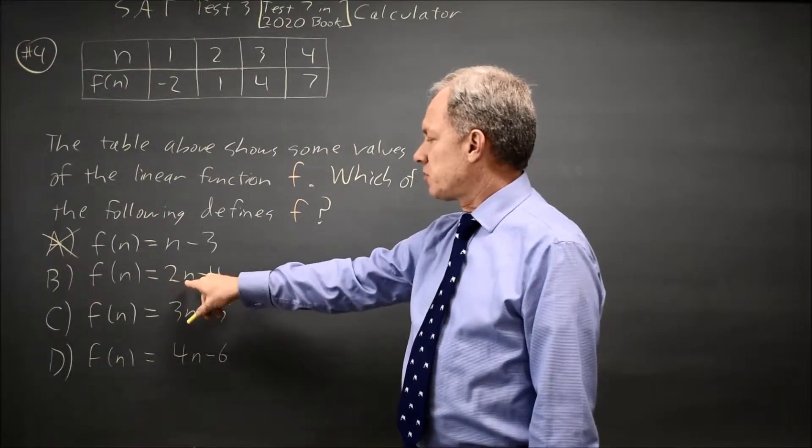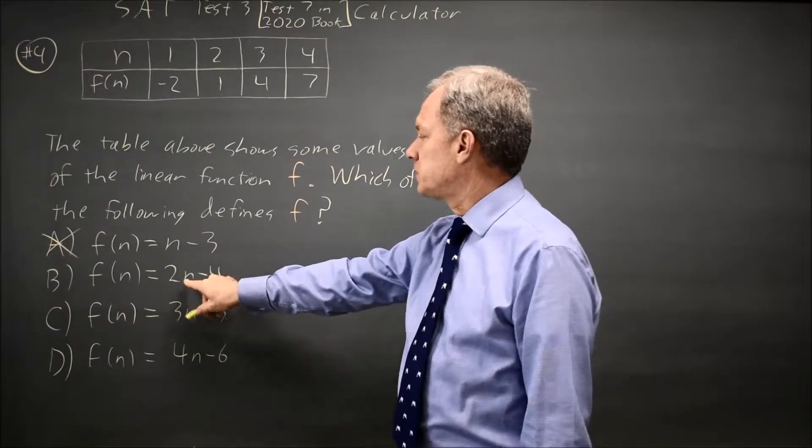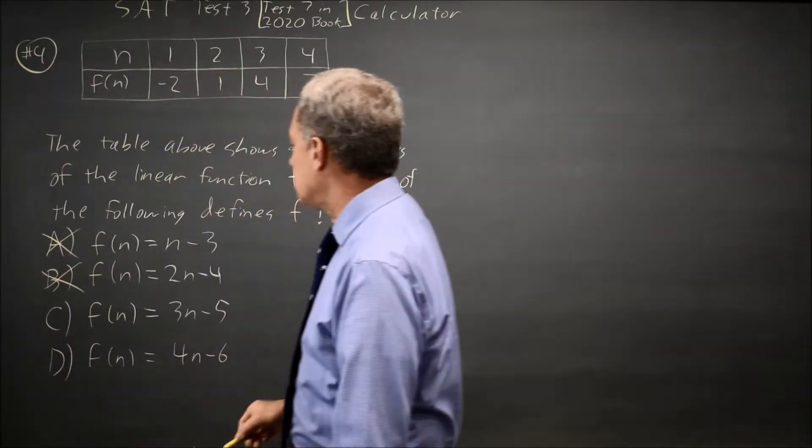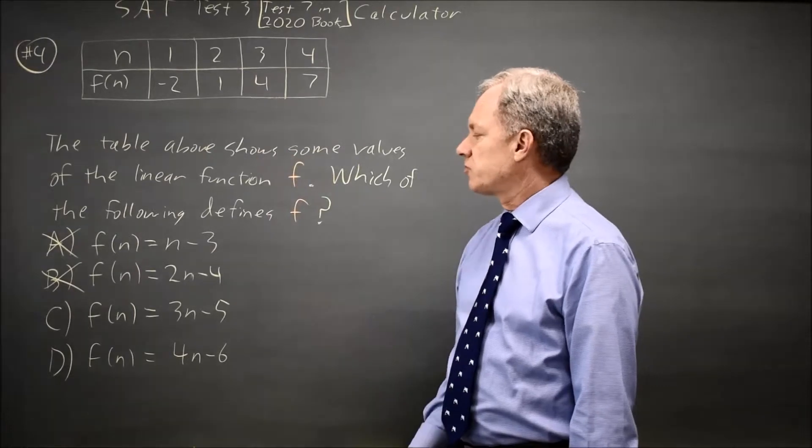n equals 4 here, twice 4 is 8, minus 4 is 4, which is not 7, so choice B is wrong. Neither one matches f of n for n equals 4.